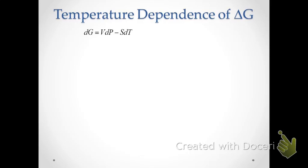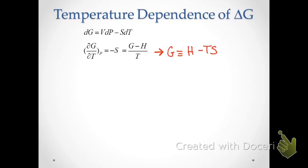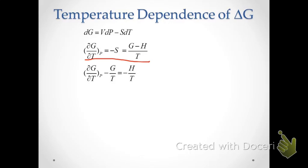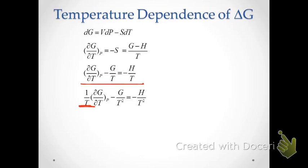Now let's talk about the temperature dependence of Gibbs energy. Going back to our original relationship, the partial derivative with respect to temperature at constant pressure equals negative S. Remembering that Gibbs energy is defined as G equals H minus TS, a simple algebraic rearrangement gives us negative S equals G minus H over T. Rearranging further and dividing through by T gives us a useful expression.